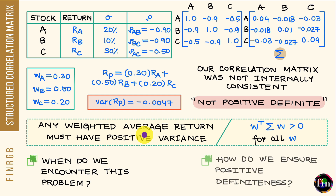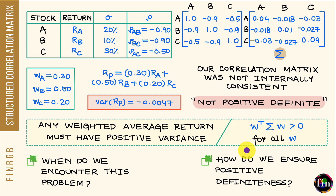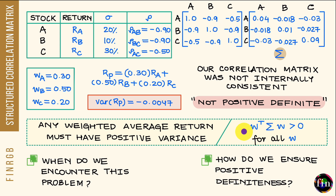How do we ensure that our correlation matrix is positive definite? We can impose a structure on it — and herein lies the title of this video: structured correlation matrices. The first simple structure is to assume that all pairwise correlations are the same and are set to the same positive value. In this situation, you can be sure that your correlation matrix is positive definite.